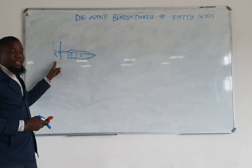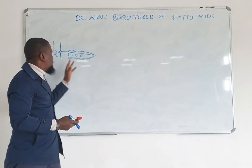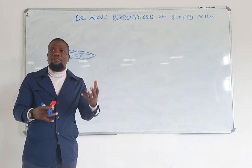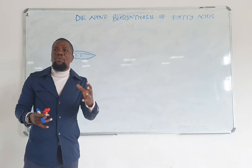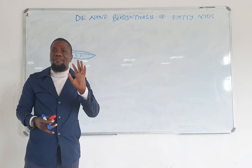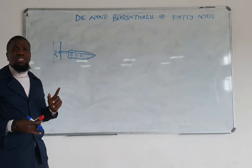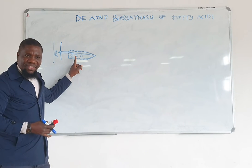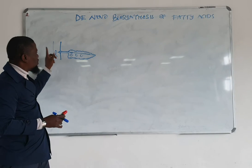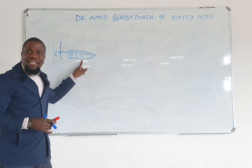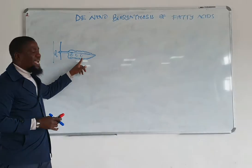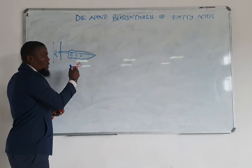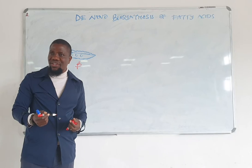Once digestion and assimilation have occurred, the absorbed glucose enters the portal venous blood and ultimately finds itself in peripheral blood circulation. A rise in blood glucose causes glucose to diffuse into the beta cells of the endocrine pancreas — the beta cells are where insulin is produced.